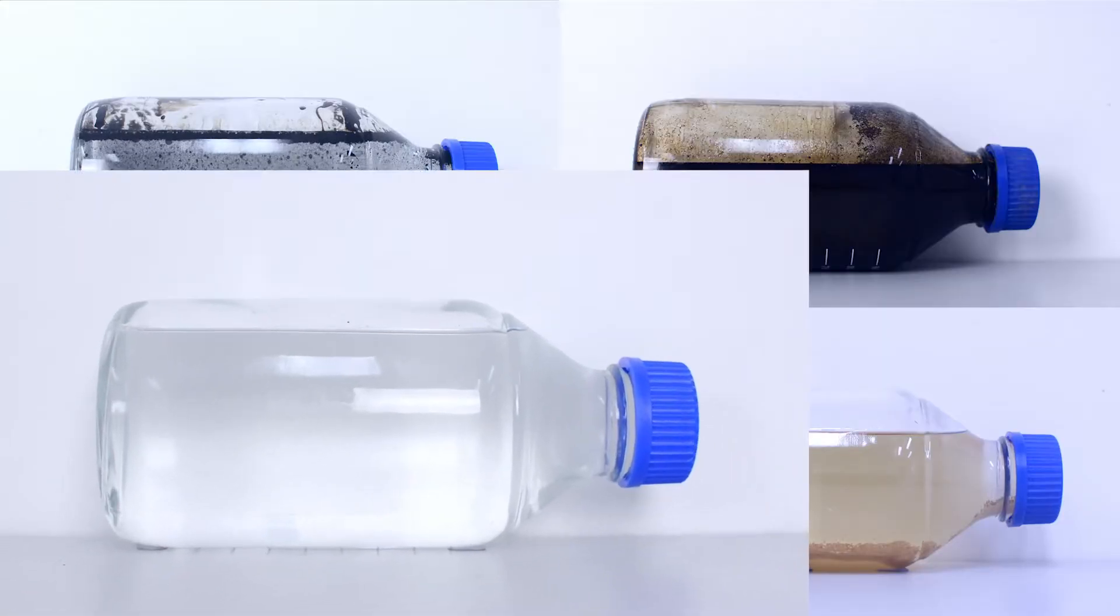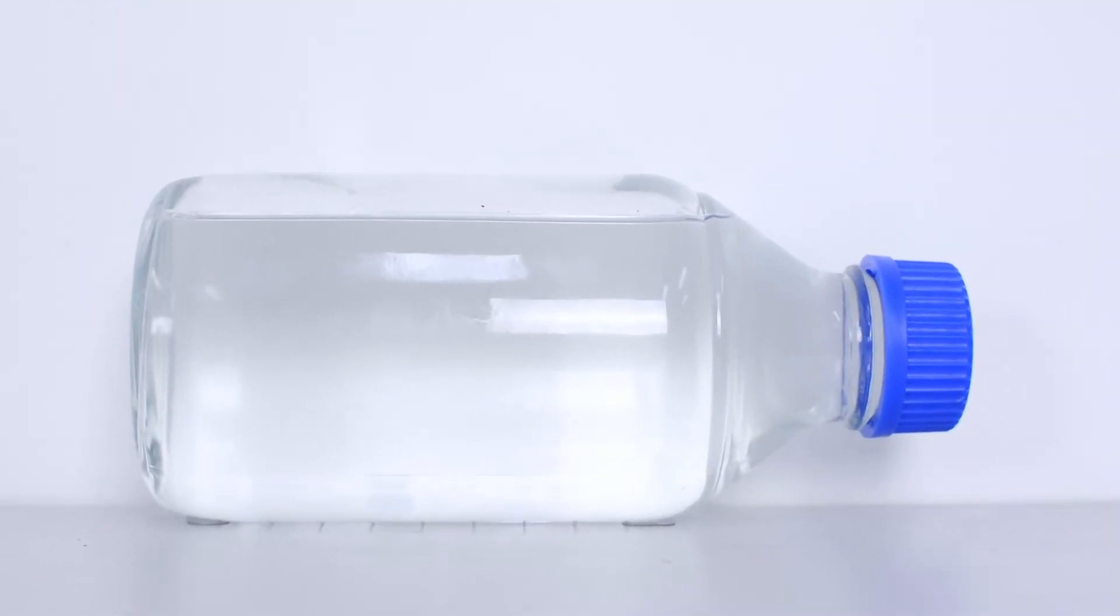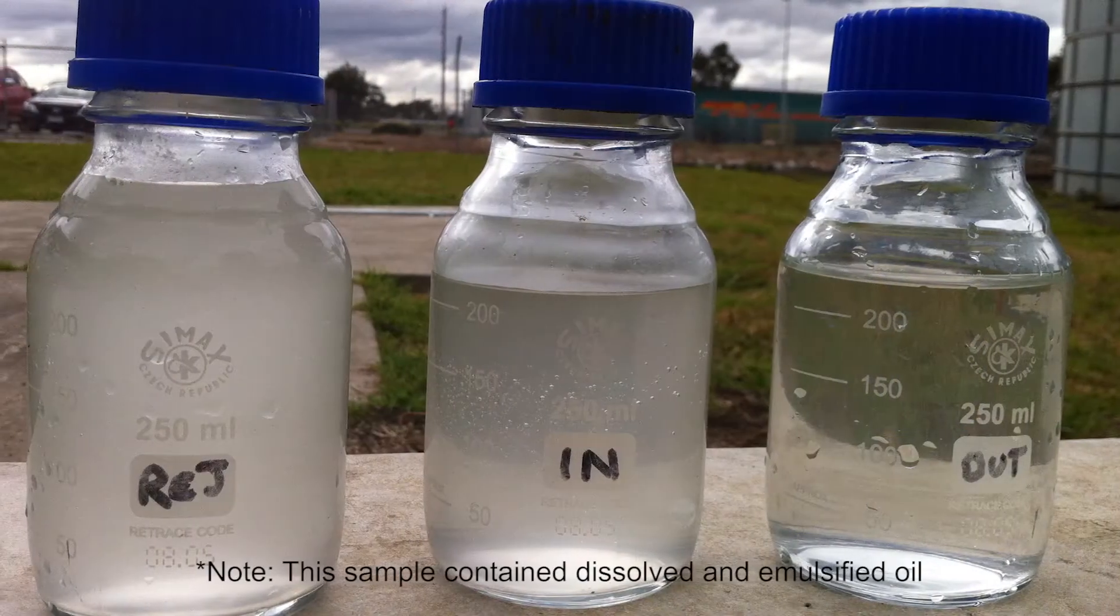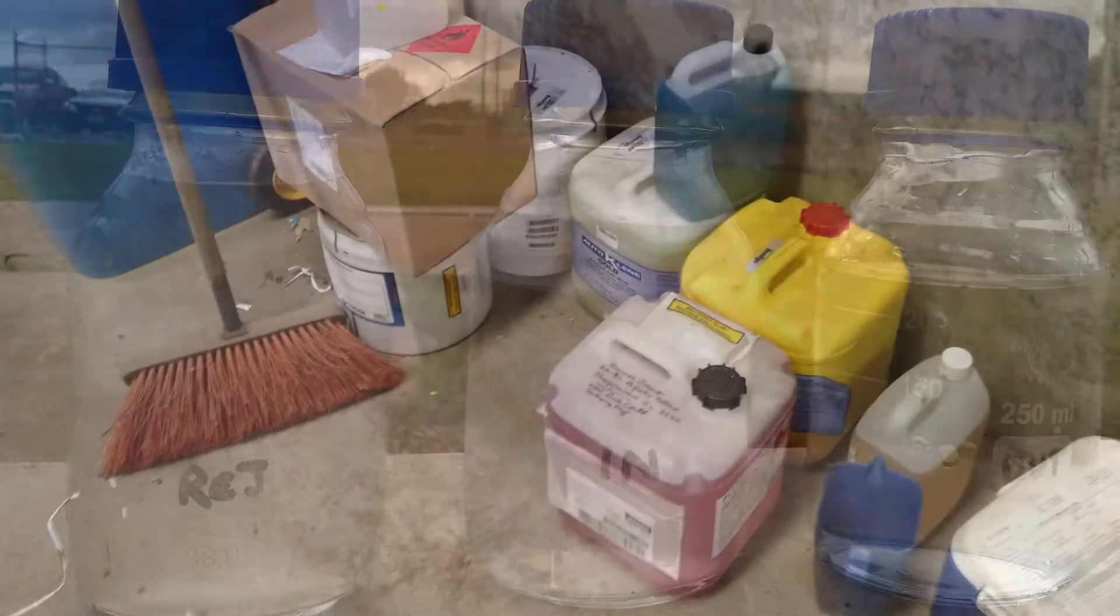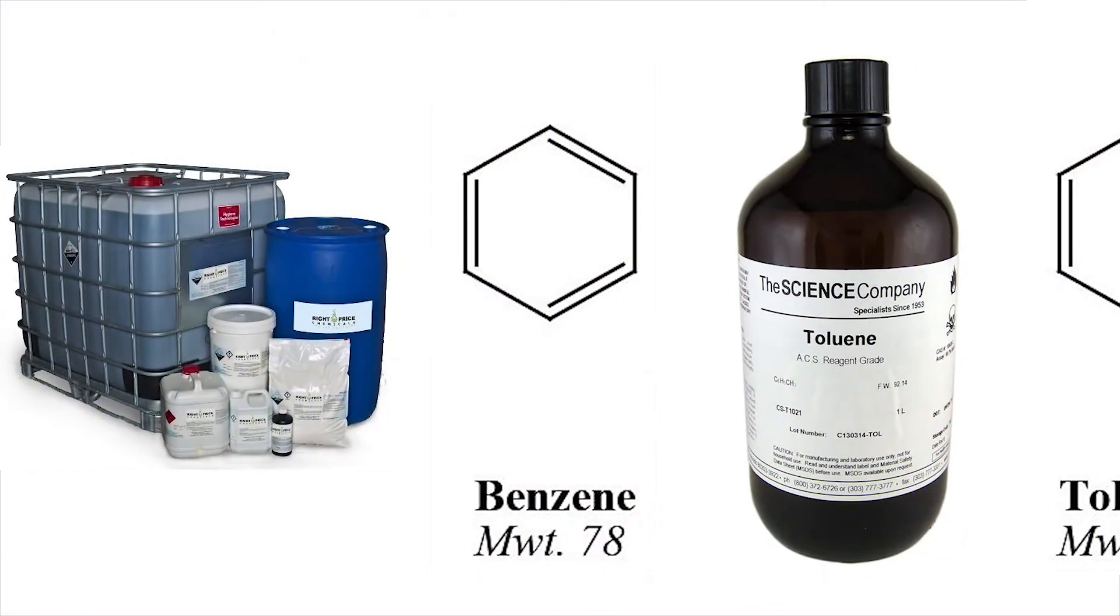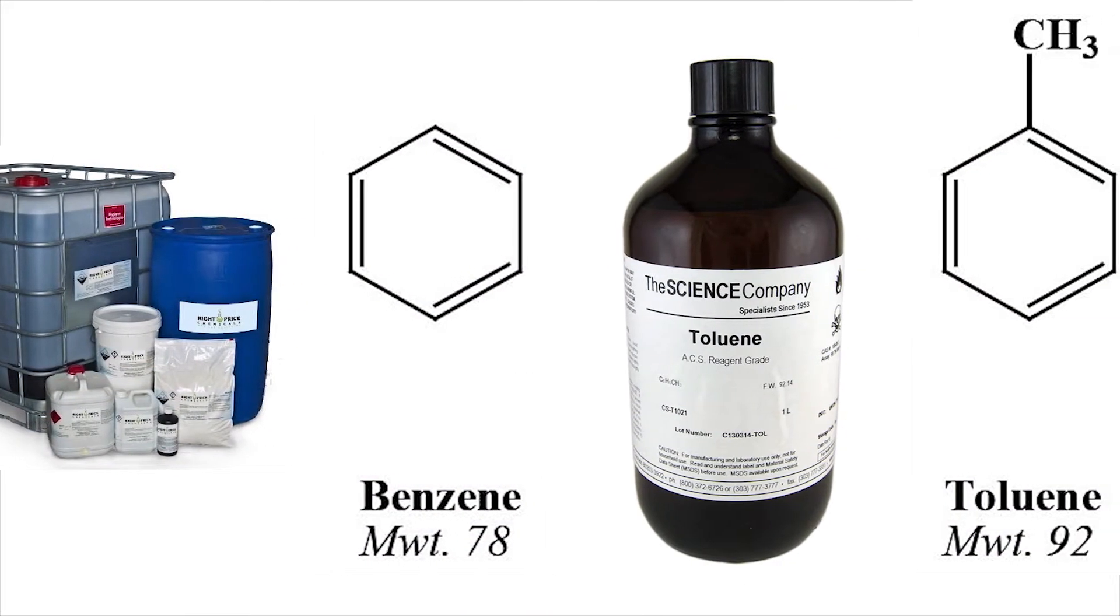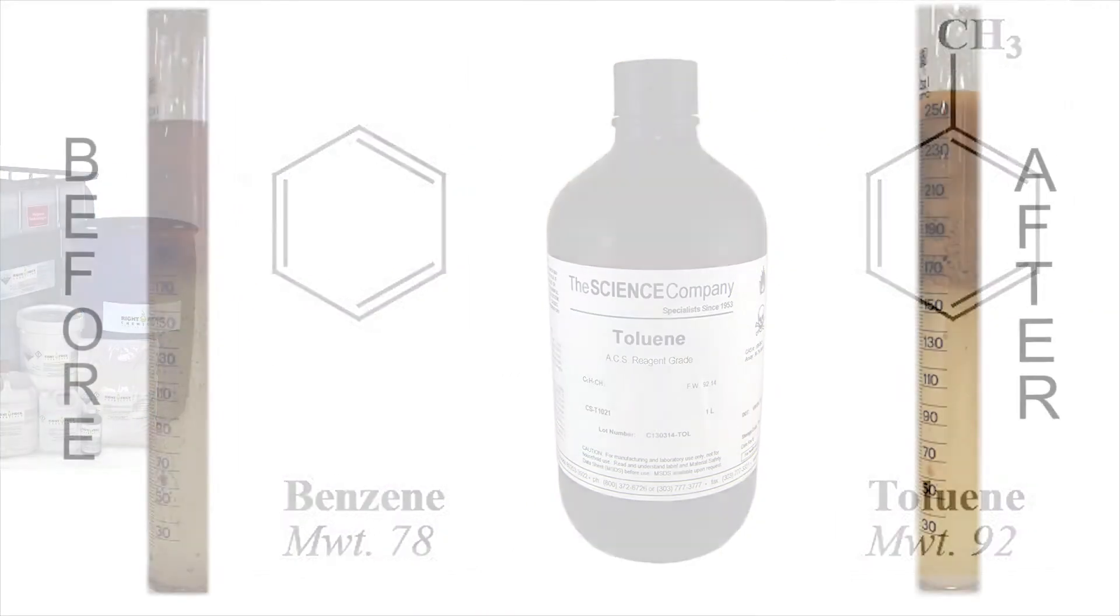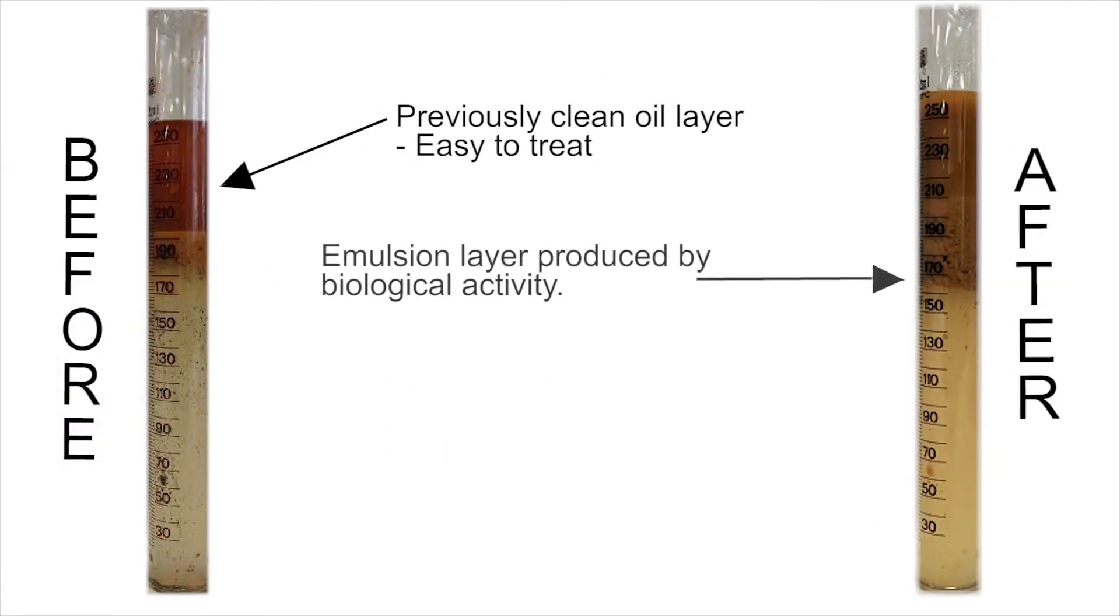Dissolved oil encompasses three different things. Firstly, there are oil droplets that are smaller than 2 micron. Secondly, we have detergents and other cleaners, and thirdly, soluble hydrocarbons such as benzene and toluene. Keep in mind biological activity can turn insoluble oil into soluble oil over time.